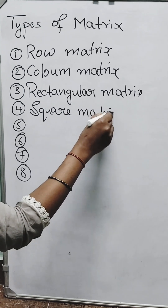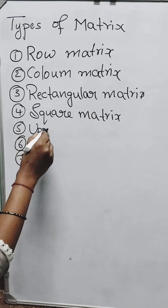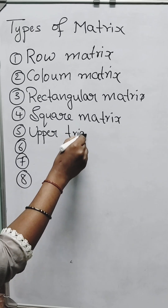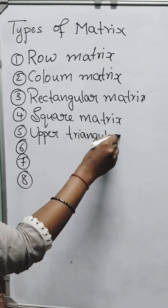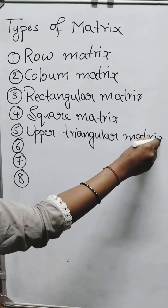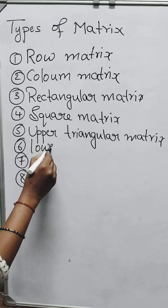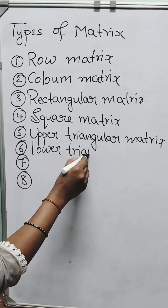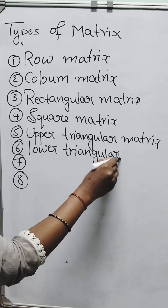Fifth one is an upper triangular matrix. Sixth one is a lower triangular matrix.